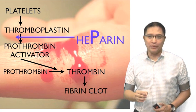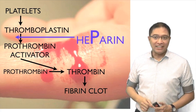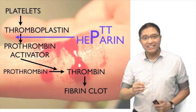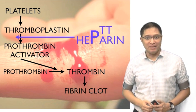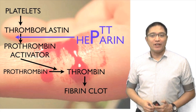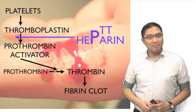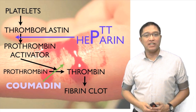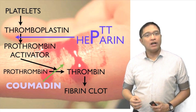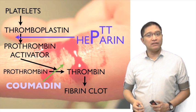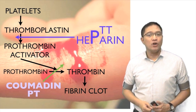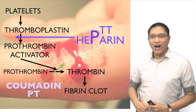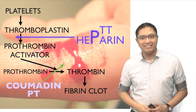So when we give heparin, we check the thromboplastin time — that's the reason why we check the PTT or partial thromboplastin time. However, there is a drug that acts on the prothrombin. That drug is known as Coumadin or warfarin. When we give Coumadin or warfarin, we check the prothrombin time or the PT, because it acts on the prothrombin.